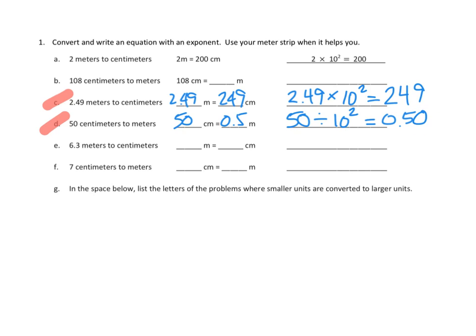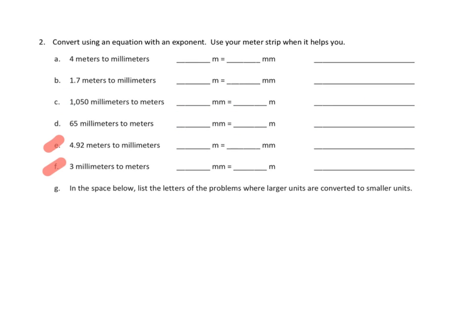And that makes sense, right? We go from a larger number of small units — 50 really tiny centimeters, and centimeters are only about this big — and that's the same as half, or 0.5, of a meter. Again, that makes sense. All right, let's take a look at a couple more problems on number two. Problem number two says: convert using an equation with an exponent. Use your meter strip when it helps you.